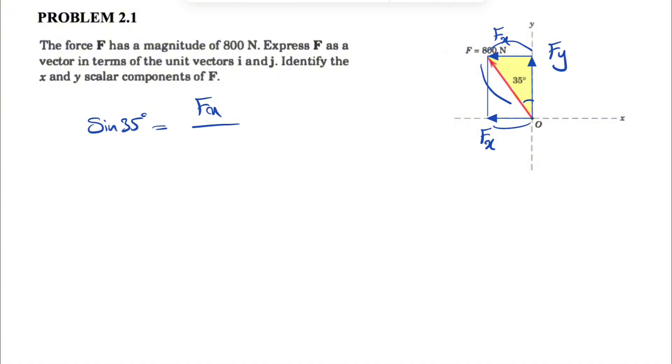So our Fx over the hypotenuse, which is F. If we cross multiply these two, we have Fx equals F times sine of 35 degrees, but that's just the magnitude.